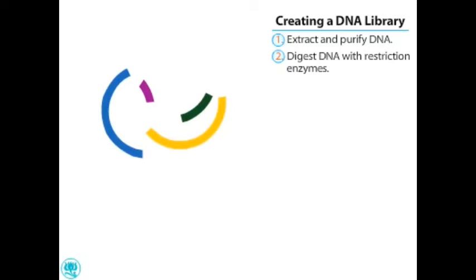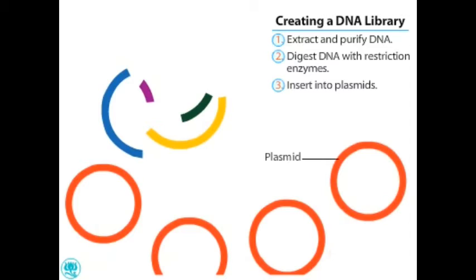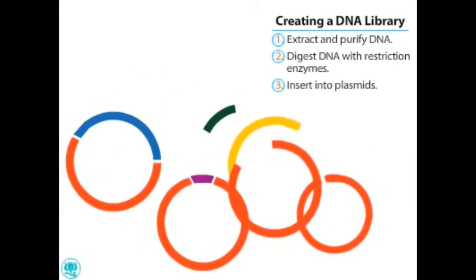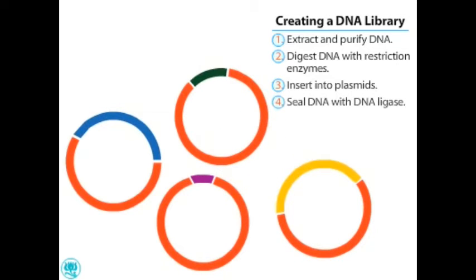To create the library, each fragment must be inserted into loops of DNA called plasmids. A plasmid is a type of vector that allows the DNA to be shuttled into bacteria. The plasmids are digested with the restriction enzymes and then sealed to the human DNA using the DNA ligase enzyme.